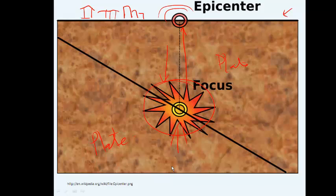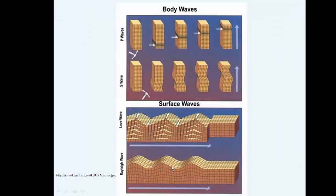All these earthquakes produce vibrations when the earth releases energy, and these are called seismic waves. There are two different types of seismic waves: surface waves and body waves. The surface waves roll along the surface like ripples on a pond. There's one type called L waves, which are surface waves, and they roll along the surface as shown in the diagram.